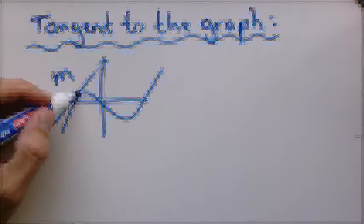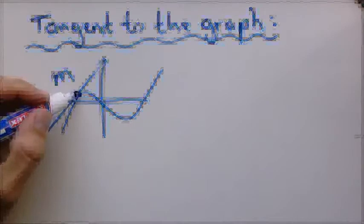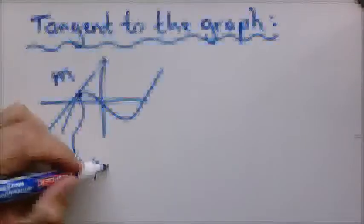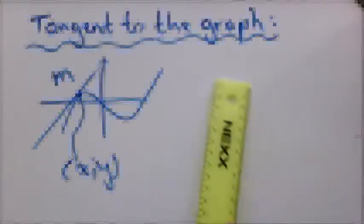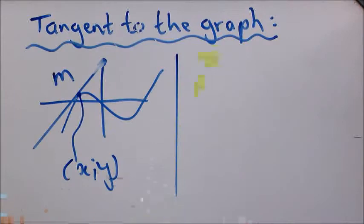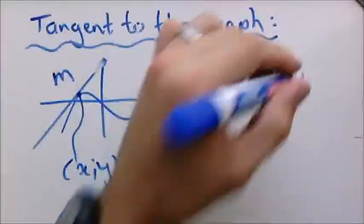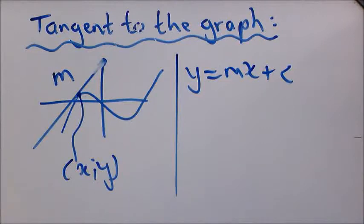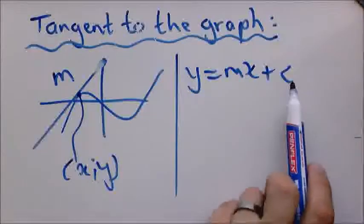And another thing is you will have to be given the X value at least for this point. So another thing is we will have an X and a Y coordinate at that point. Now a tangent being straight line automatically we have that equation, right? Y equals MX plus C. So you need the gradient and the Y intercept.